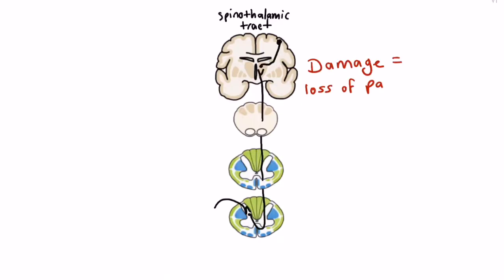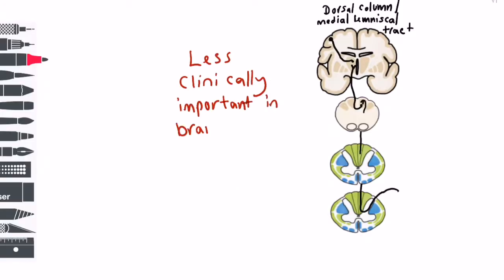Damage to the spinothalamic tract will result in loss of pain and temperature sensation. As we are talking about the brainstem, these fibres have already decussated by this point and thus the sensory loss will be contralateral to the lesion. The dorsal column pathway is less clinically important in brainstem stroke.